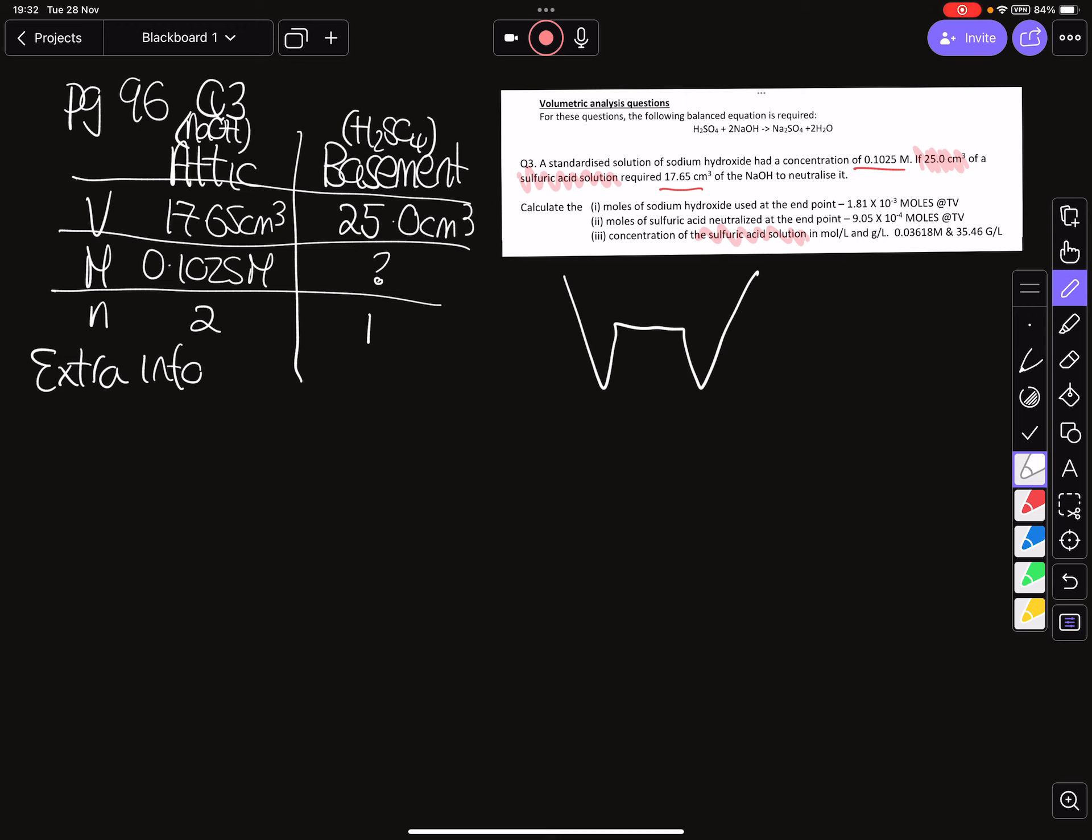So again we're going to do first principle maths. Getting bored of this now, so we start with our big M value. This is going to be our way in. When we go down, we divide by a thousand to turn our moles into centimeters cubed. We then go up: when we go up, we multiply by our titre volume. When we get to the top, we're going to use our ratio, which in this case is going to be two is to one. Once we find our moles here, we're going back down: we are dividing by the titre volume to again give us moles in a centimeter cubed. And then finally, to finish off our first principles, we are multiplying by a thousand, which is going to give us our concentration of our sulfuric acid.